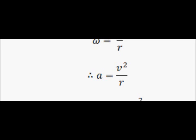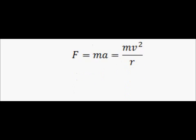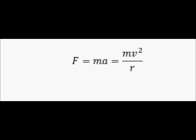The last step is very simple. We use Newton's second law: F equals ma. So we multiply v squared over r by m to get the equation for the centripetal force: F equals mv squared over r.